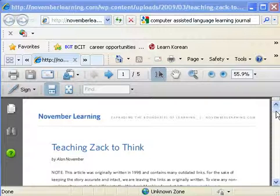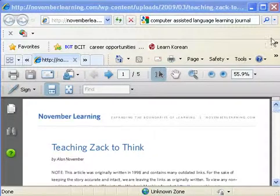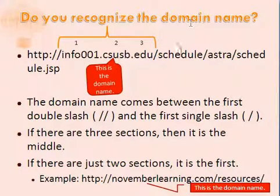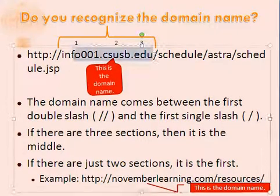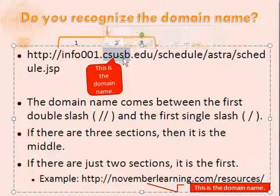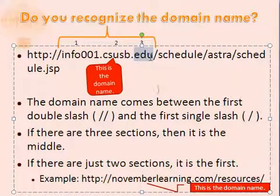Third, look at the information about the website itself. Check the URL, which is the web address, and look at the different parts of it. After the HTTP, you'll typically have a subdomain, then a period, then the main domain name, and then the organizational ending — such as .edu, .gov, or .com.